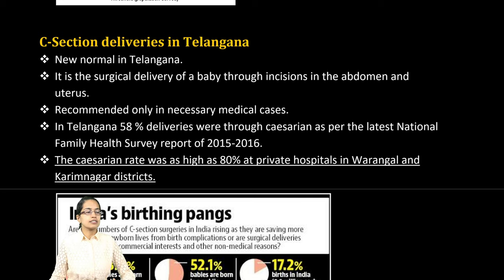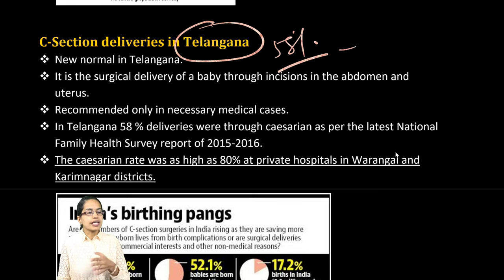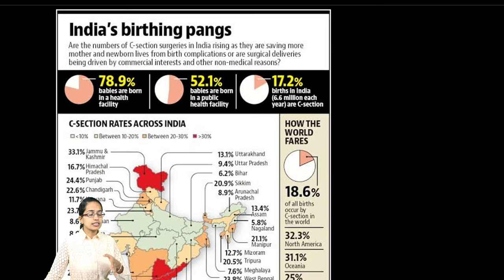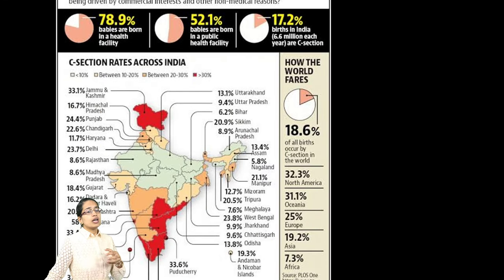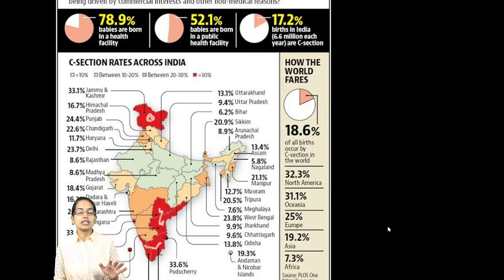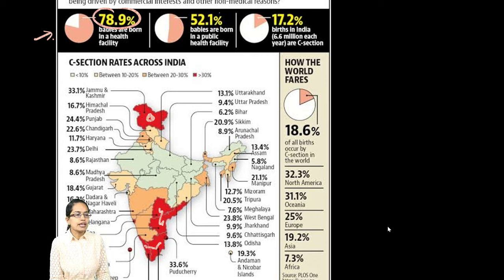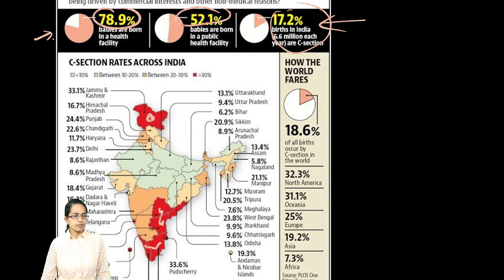Caesareans have been a growing trend. Telangana is one of the states with the highest percentage — around 58% — of which a very high proportion, around 80%, occur in private hospitals. This shift is due to convenience and it being seen as a prestige symbol. States highly prone to C-sections include Jammu & Kashmir, Andhra Pradesh, Telangana, Tamil Nadu, and Kerala. In public health facilities, 52% of births occur there, with C-sections accounting for 17% of total births in India.